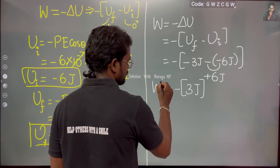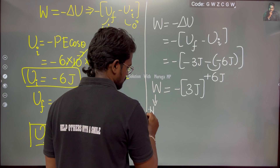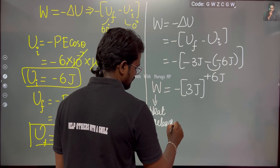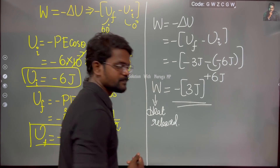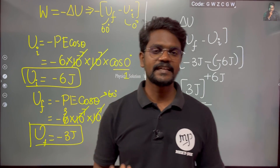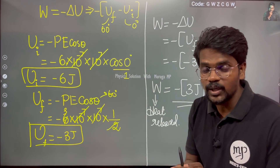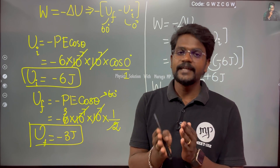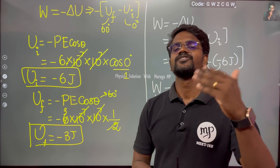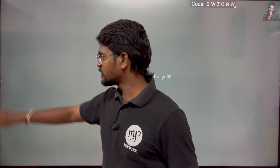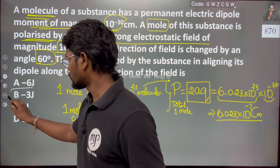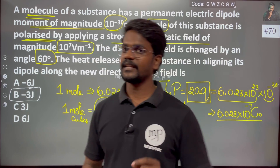That's it — you can also say this is the heat released by one mole when it is placed in an electric field of 10 to the power 7, with initial angle 0 degrees and final angle 60 degrees. The answer is 3 joules, not minus 3 joules.